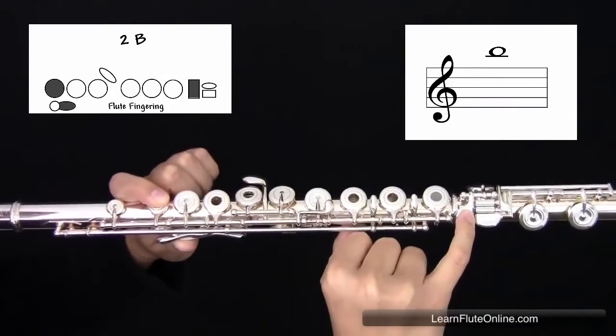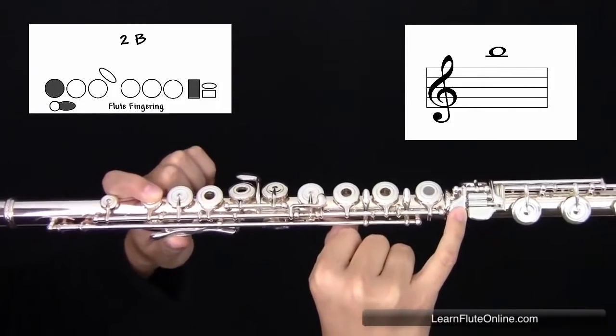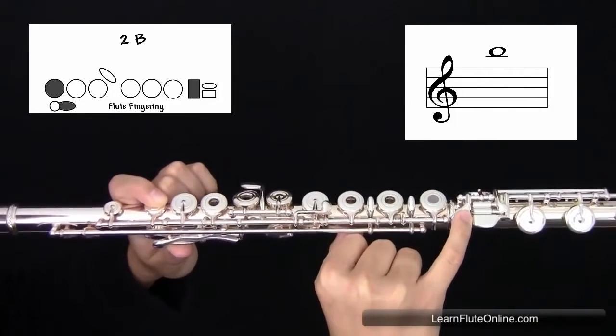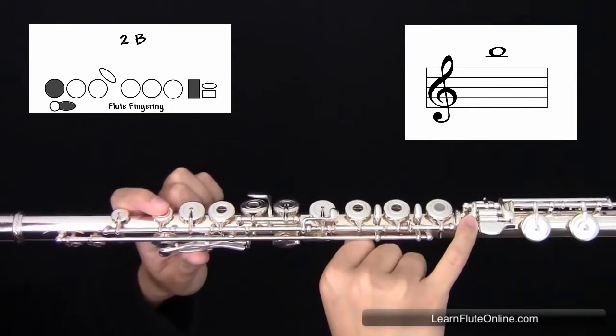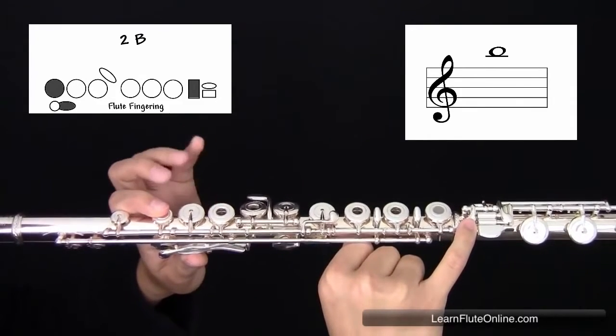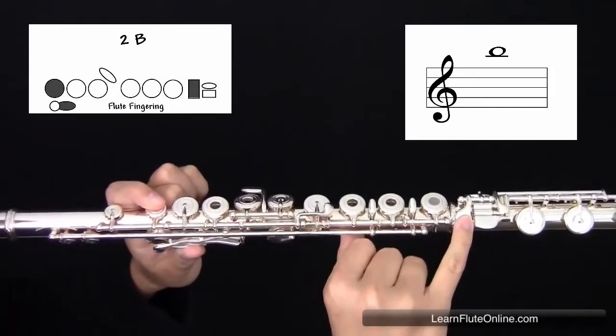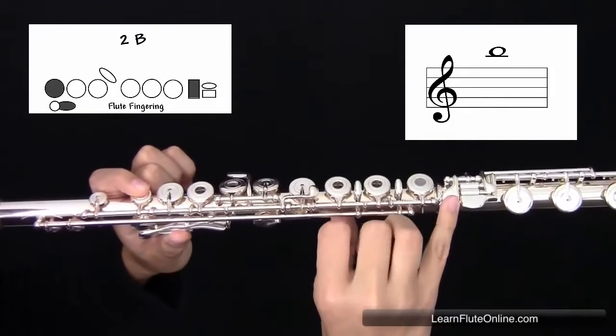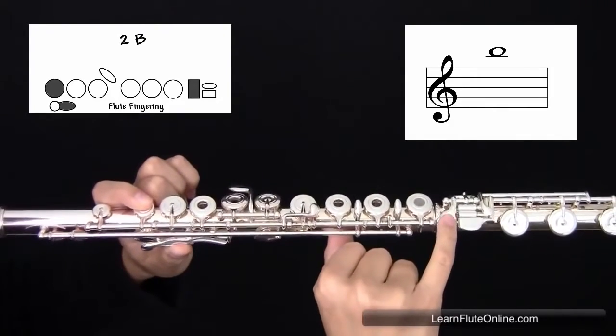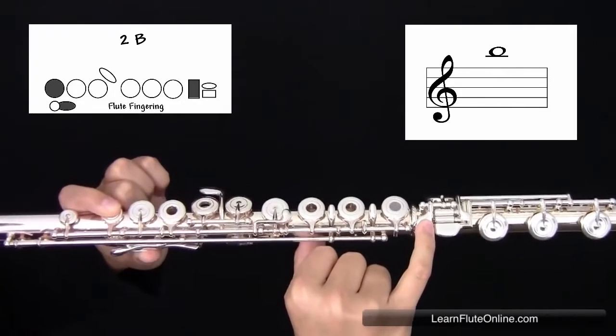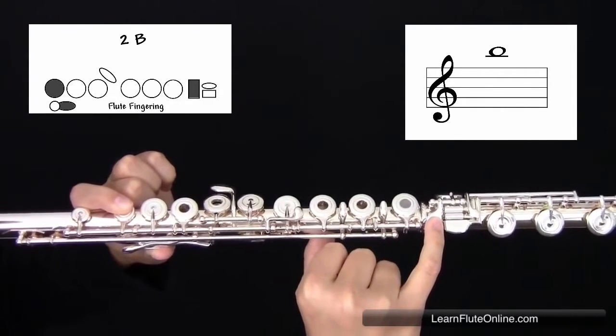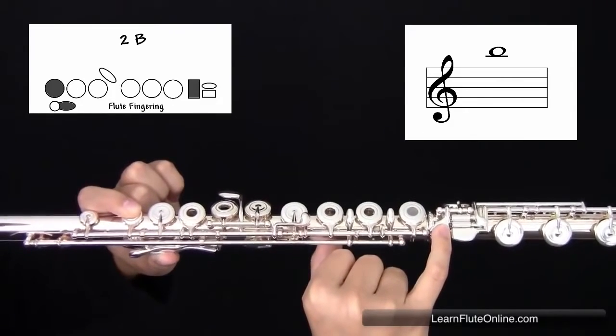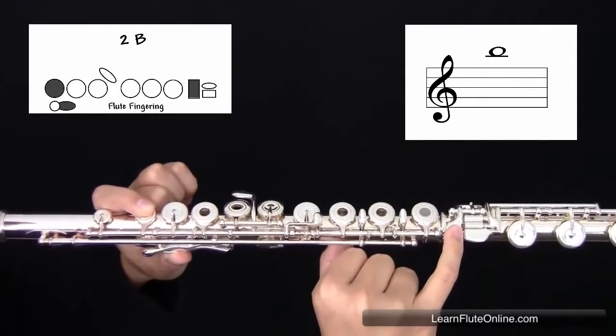In the second octave, the fingering is the exact same as the first octave. Starting with the left hand, your thumb and first finger, skipping your second, third, and pinky. In the right hand, skipping your first, second, and third fingers, placing your right hand pinky on the first key on the foot joint. You're going to blow with faster air. It should sound like this.